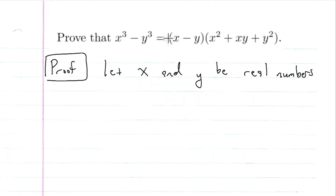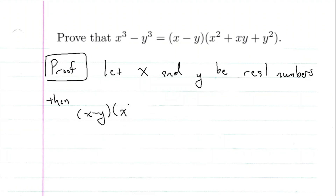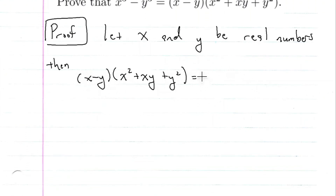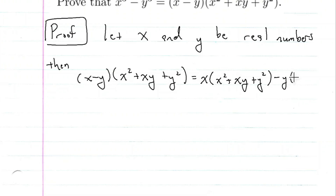To prove identities, we always take the side with the most amount of information and manipulate it algebraically to see if we can get it to the other side. So we take x minus y times x squared plus xy plus y squared, and using the property of distribution, we get x times x squared plus xy plus y squared, minus y times the same thing.